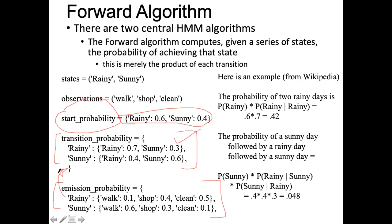These probabilities can be determined from the data. Once you have these probabilities, you can make inferences. For example, if you want to find out the probabilities that two consecutive days were rainy, you can apply the forward algorithm. The forward algorithm means that from a given state, you determine what the probability of having the next state would be — for instance, if the initial day is rainy, what is the probability that the next day would also be rainy.